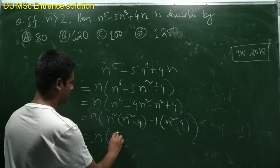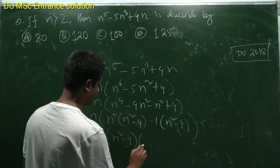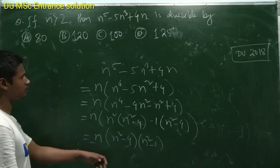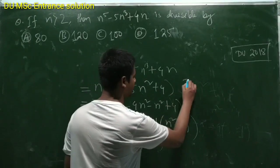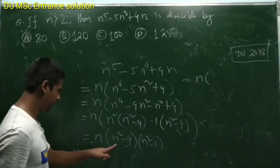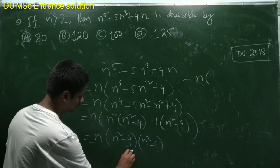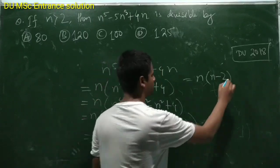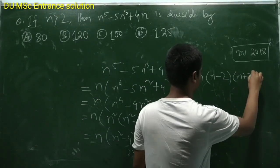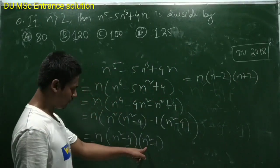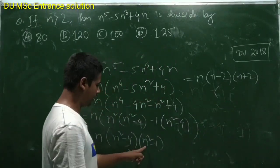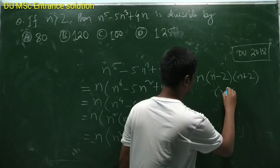So it will become n into n squared minus 4, then n squared minus 1. Again from here, n into a squared minus b squared, so n minus 2, n plus 2. Again from here, a squared minus b squared, so n minus 1, n plus 1.